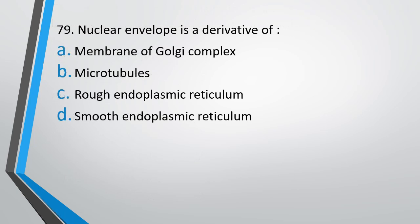Question number 79. Nuclear envelope is a derivative of: cell membrane, Golgi complex, microtubules, rough endoplasmic reticulum, or smooth endoplasmic reticulum. The correct answer is option C — rough endoplasmic reticulum.